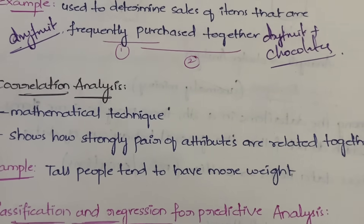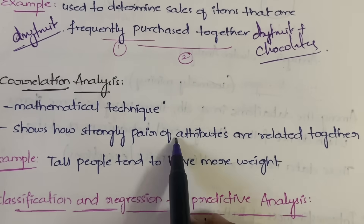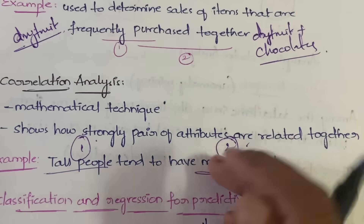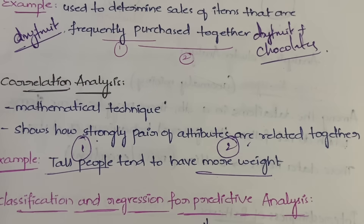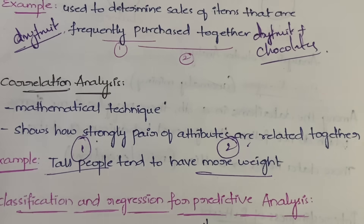Correlation analysis is a mathematical technique. It shows how strongly a pair of attributes are related to each other. For example, tall people tend to have more weight — here 'tall people' is one attribute and 'more weight' is another attribute. Correlation analysis measures how strongly those two attributes are related to each other.